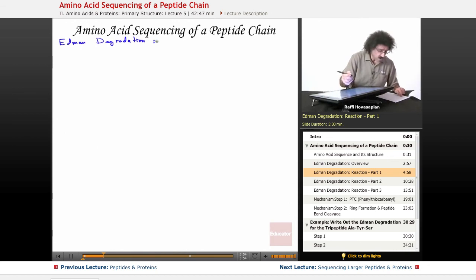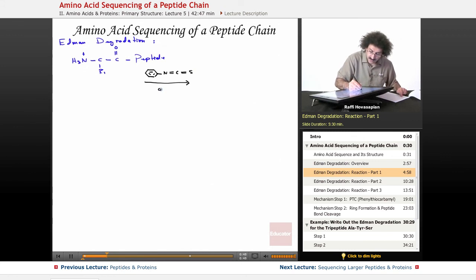So the Edman degradation. Let's start off with just a generic peptide. So we have H3NCC, and I'm just going to go ahead and write peptide for the other, because again, we're just going to be concerned with the N-terminal, the one on the left. So we have the carbonyl carbon there, and we have our R group attached to the alpha carbon, and this is a plus. So the first step is, I'm going to be drawing this thing, N double bond C double bond S. Okay, so what we do is we take this peptide and we react it with something called phenyl isothiocyanate under mildly alkaline conditions. Okay, so that's the first step.